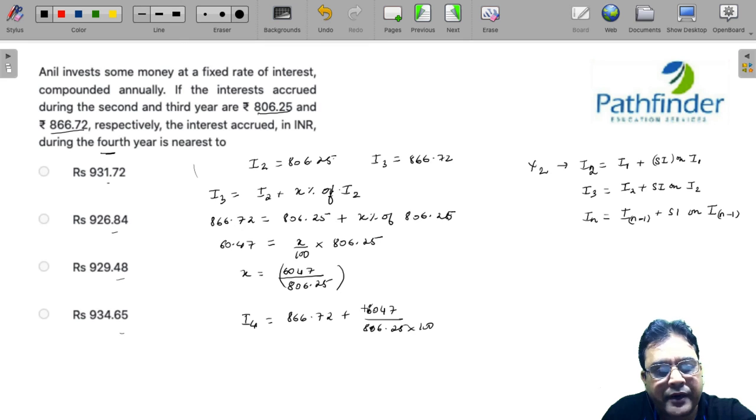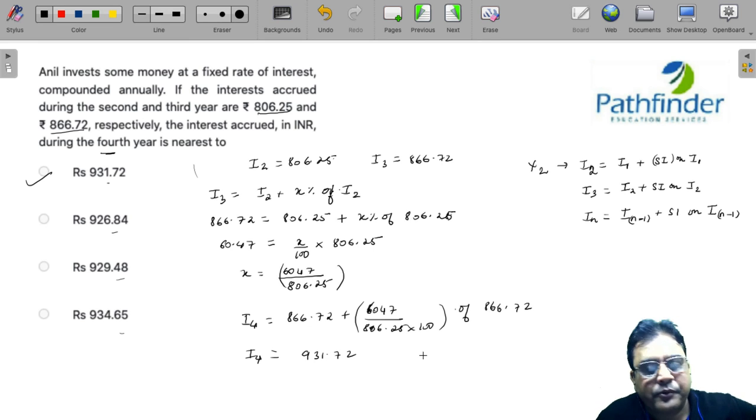x percent is x by 100. So x is 6047 upon 806.25 divided by 100, this much of 866.72. If you calculate this, I have already done this on calculator, I remember it will come out to 931.72, which should be your answer.